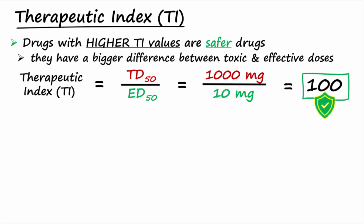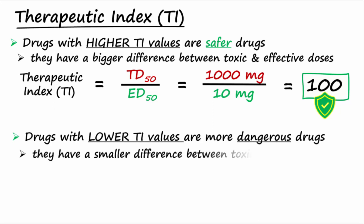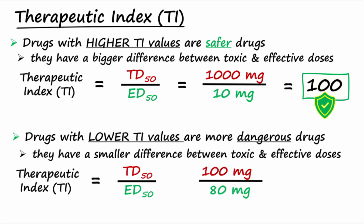In contrast, dangerous drugs have a low therapeutic index because toxic and effective doses are more similar. For example, if the TD50 of a drug was 100 mg and the ED50 for the same drug was 80 mg, the therapeutic index would be 1.25, and a potentially dangerous drug.